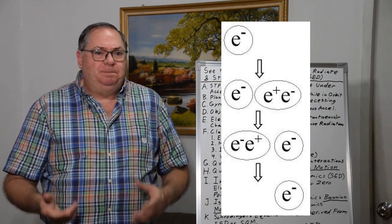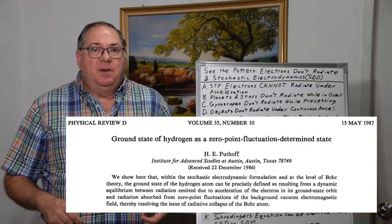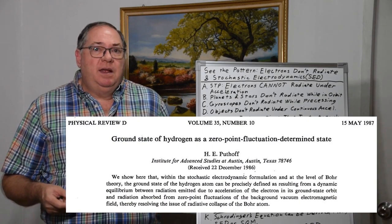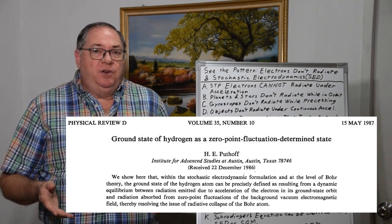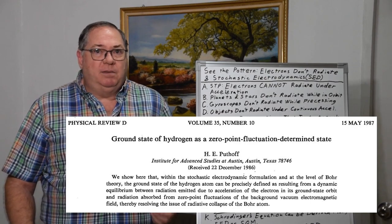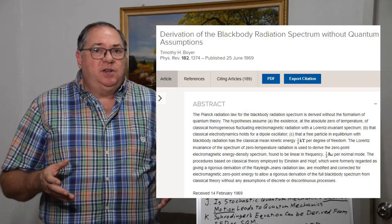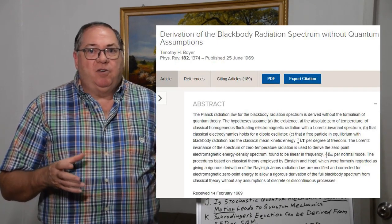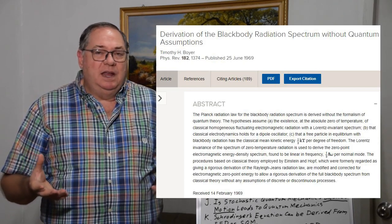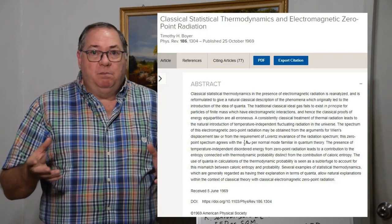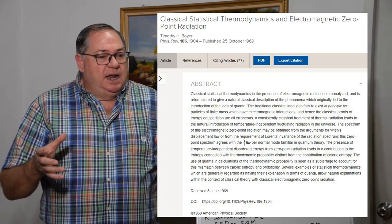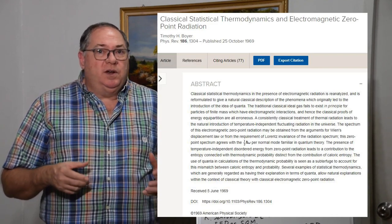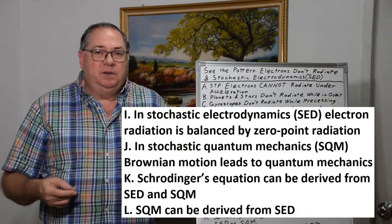I became interested in quantum field theory when a co-worker in 1990 gave me a copy of a paper by Hal Puthoff. He used what's called stochastic electrodynamics to try to solve the hydrogen ground state problem. 'Stochastic' just means random — it means you have interactions between the electron and the zero point field, or as I prefer to call it, the quantum field. It was proposed by Marshall, Boyer, and others — Boyer did a number of papers I reviewed, as did Dan Cole.